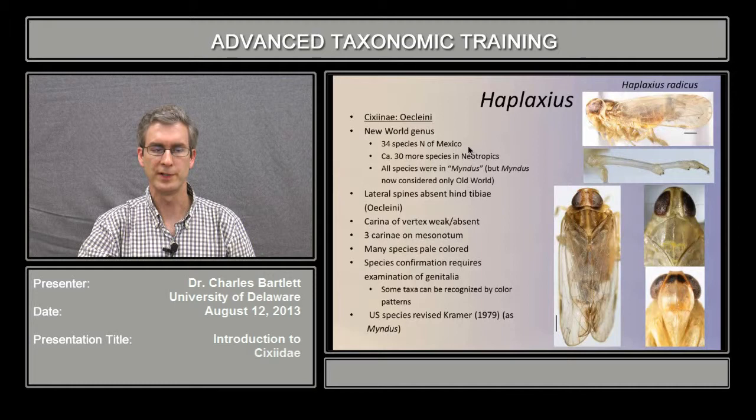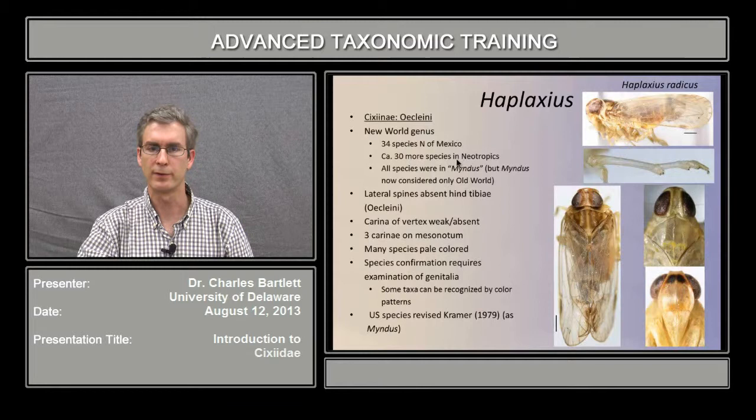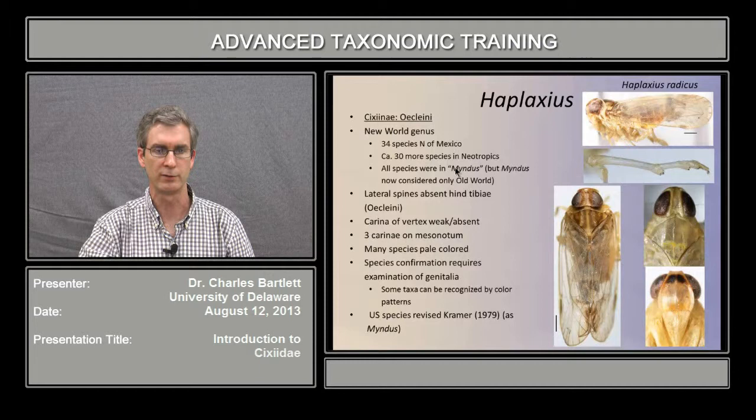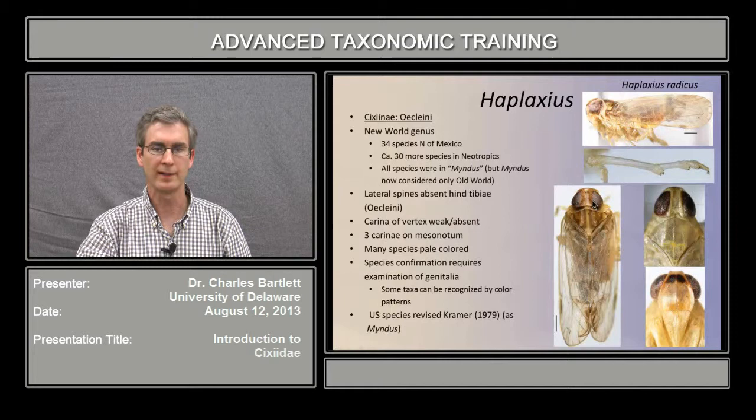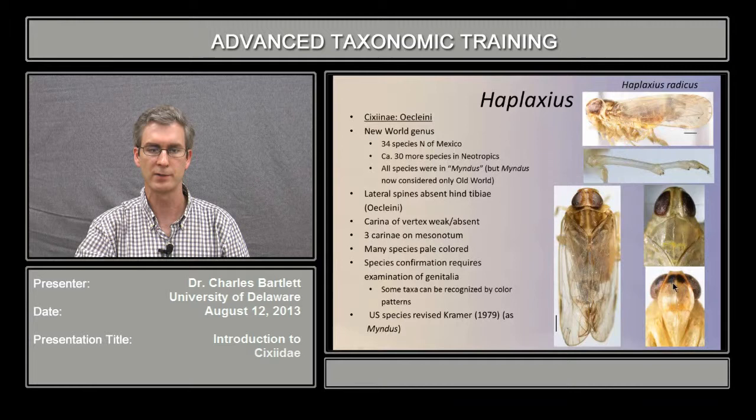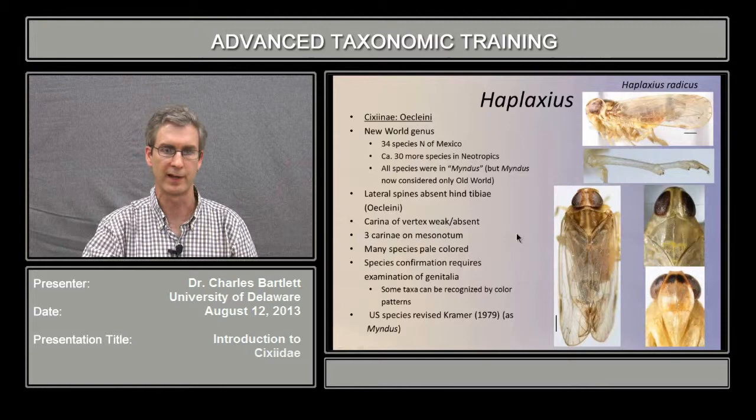All the New World species that used to belong to the genus Mindus have now been moved into the genus Heplaxeus. There are 34 species of Heplaxeus north of Mexico, and an additional 30 species found in the Neotropics. They can be recognized by the absence of lateral spines on the hind tibia. Unlike Eucleus, the vertex is broad and the mesonotum bears 3 charine. Members of the genus Heplaxeus are usually pale, and some species can be recognized by coloration pattern, however male genitalia is necessary to confirm species identification.